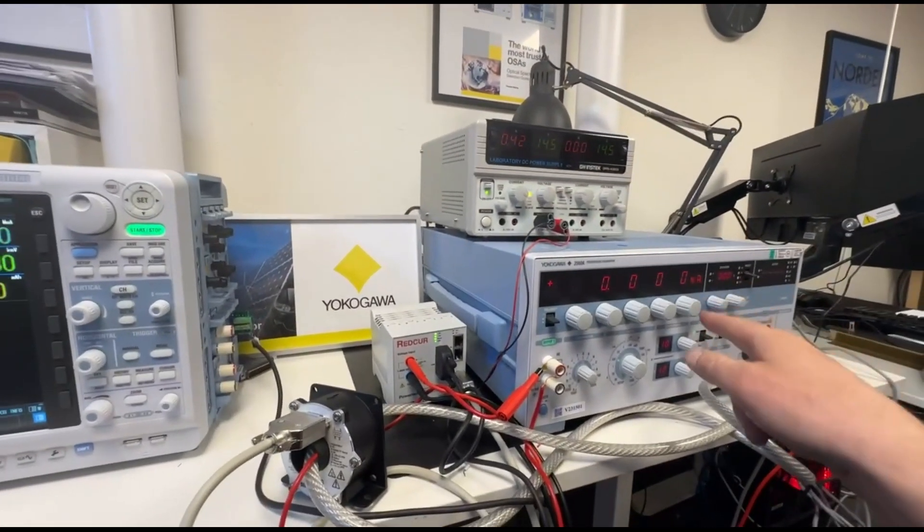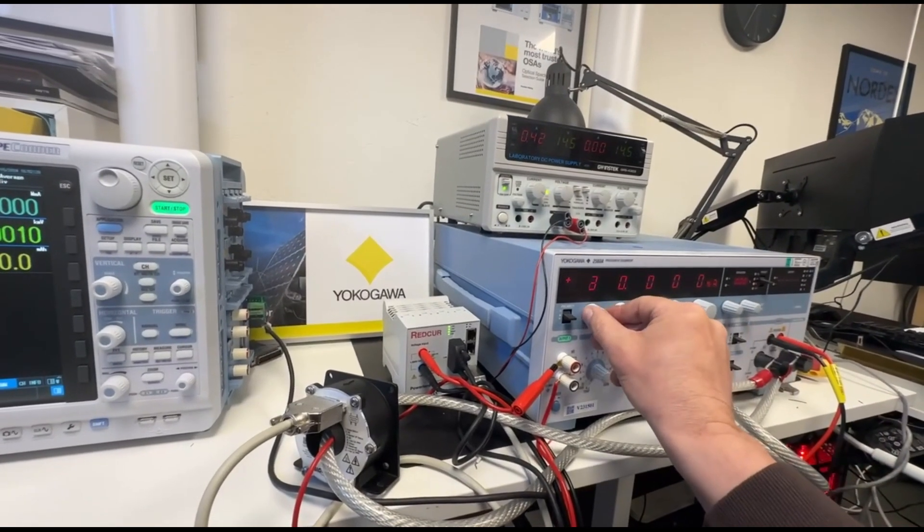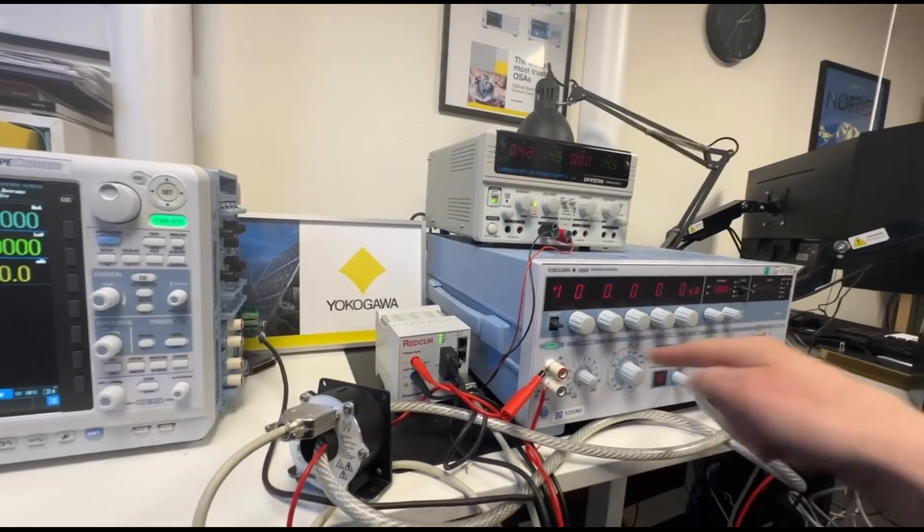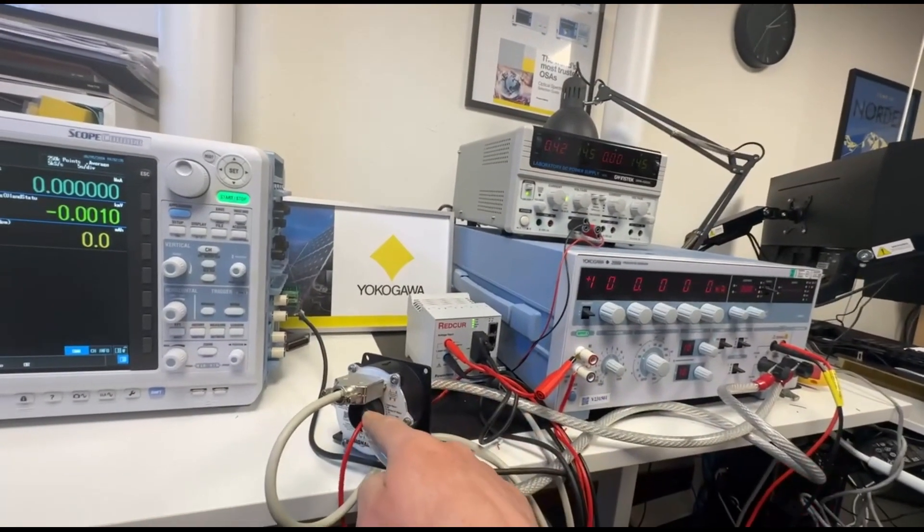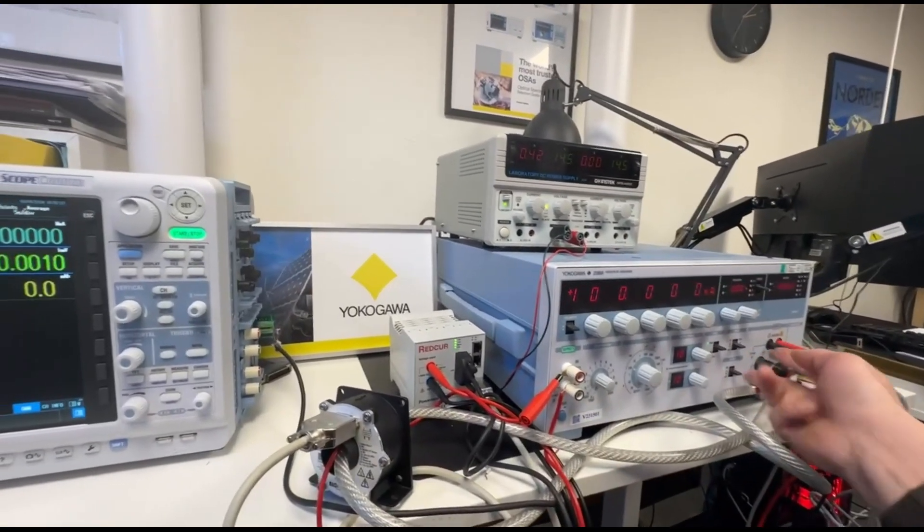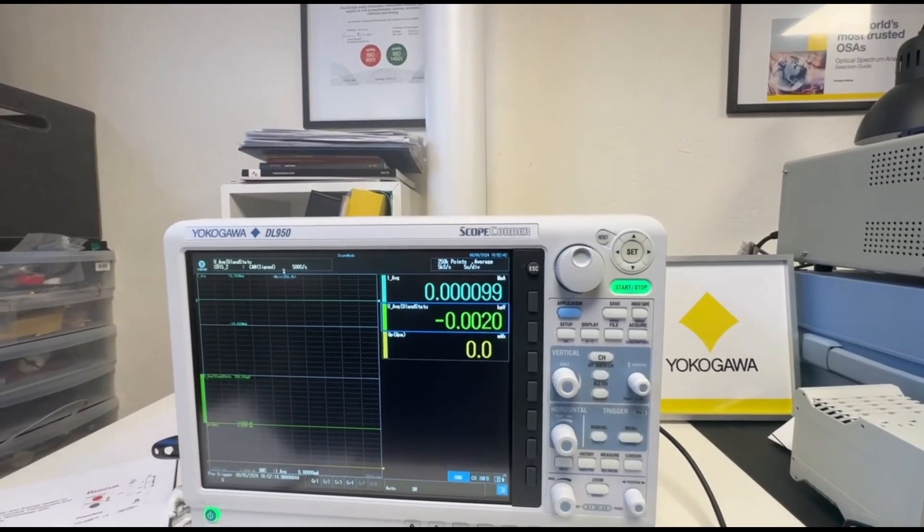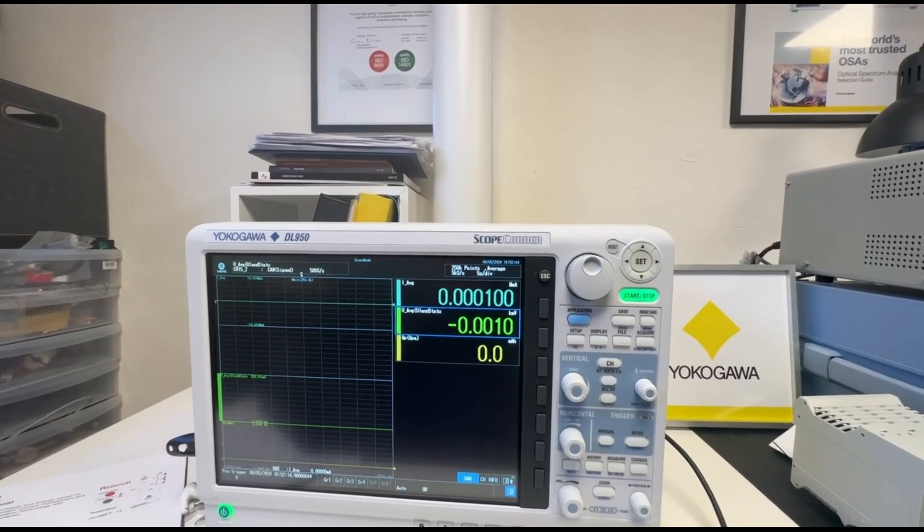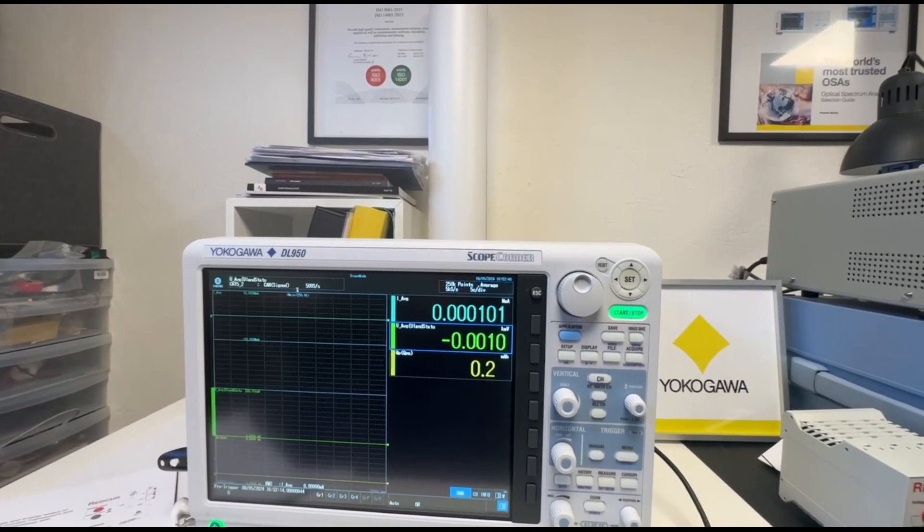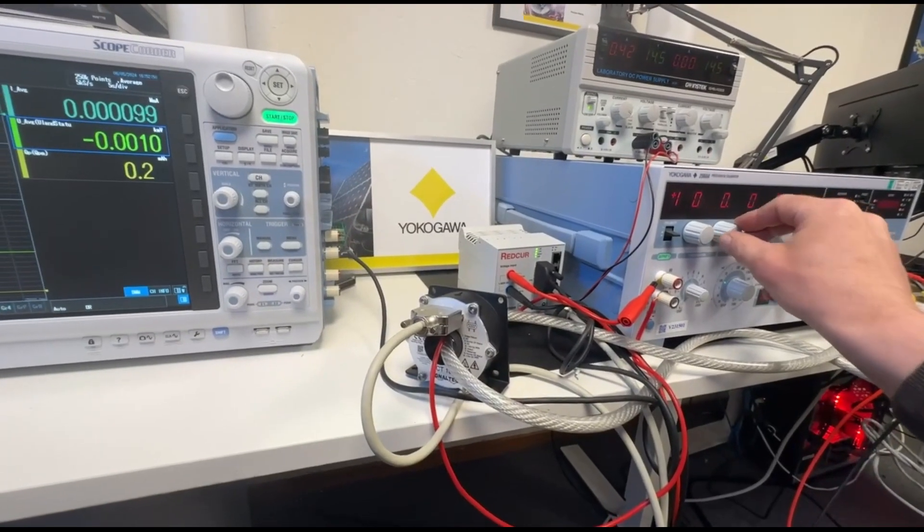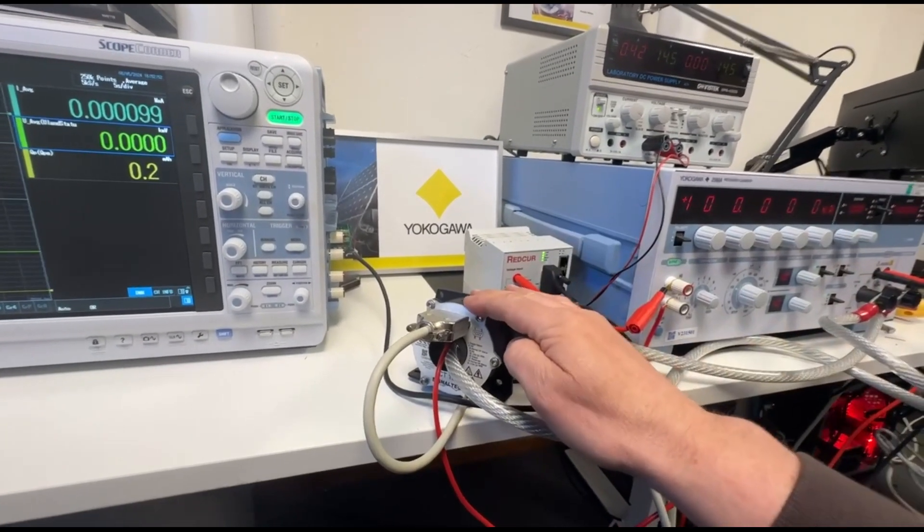So I will output, just as a reference, we will output 100 milliamp through the smaller cable here, going through the sensor. Put on output. And we see 99 milliamp. So even by changing 1 milliamp, I can see the change even though this is a current sensor rated up to 100 amp.